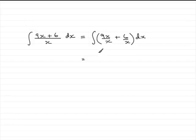And what this means is that you've got to integrate 9, because the x is cancelled here, plus 6 over x. Put that in a couple of brackets.